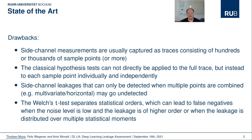Also, it is known that the separation of statistical orders in the Welsh T-test can lead to false negatives when the noise level is low and the leakage is of higher order, or when the leakage is distributed over multiple statistical moments.